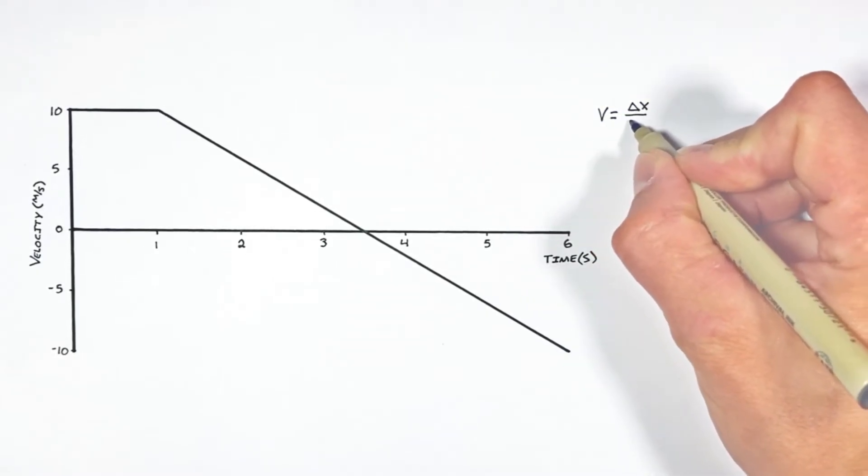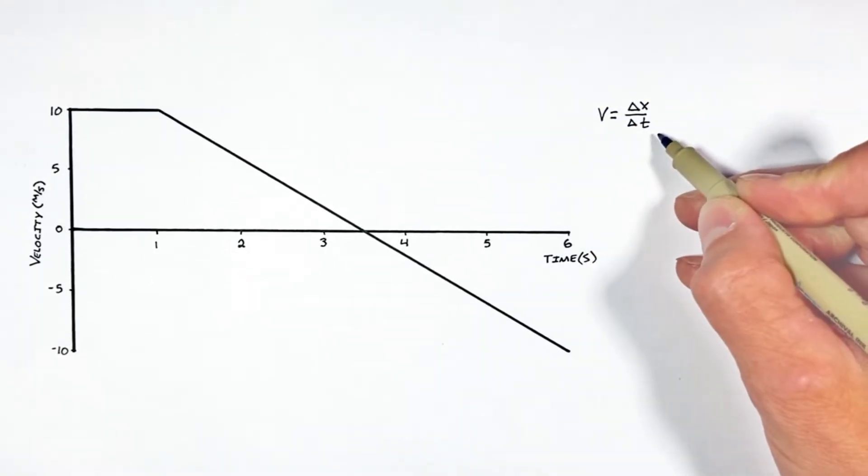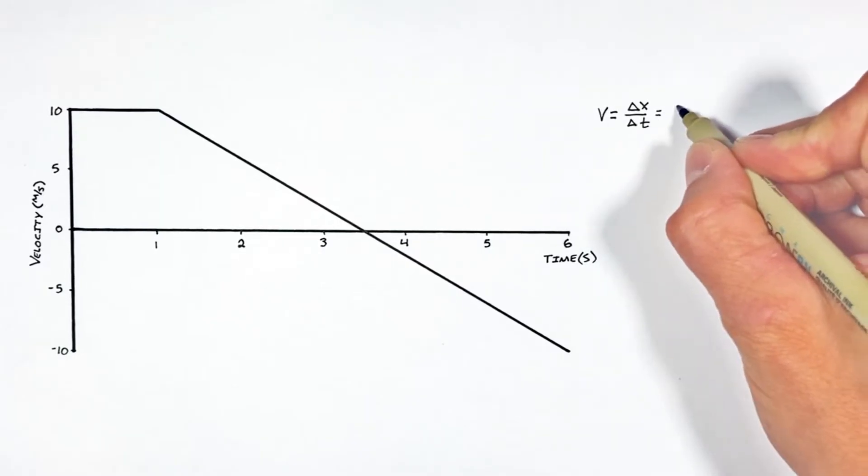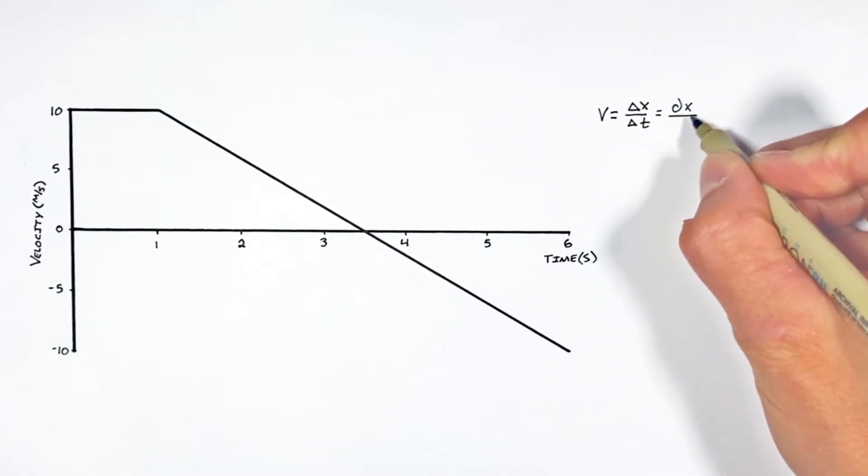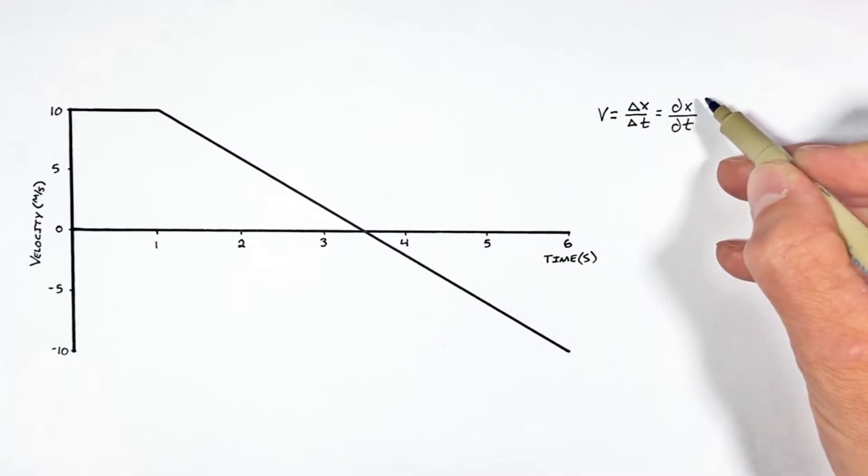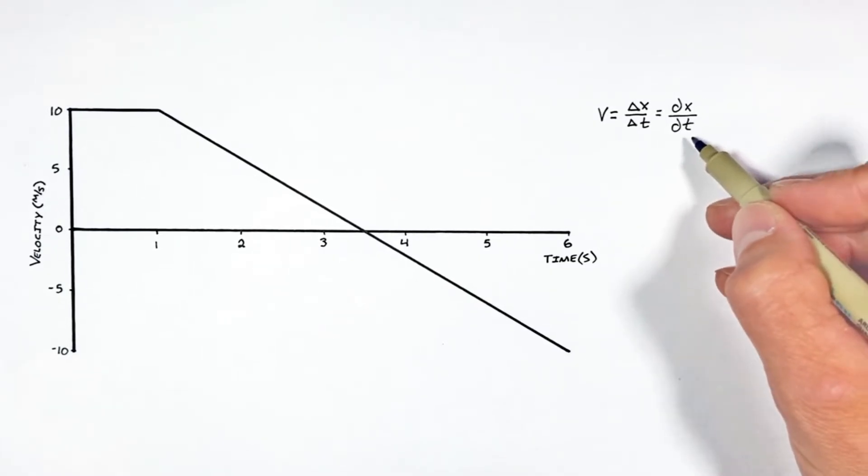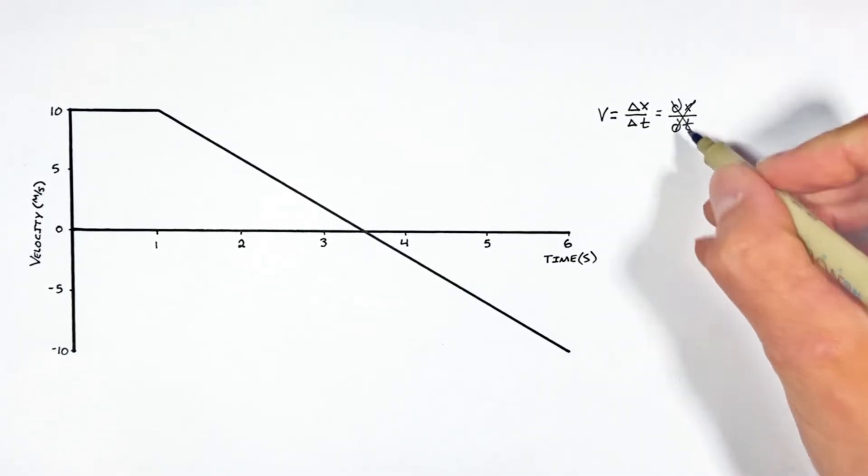And velocity can be given by a change in position over a change in time. Or if you want to get more strict about this, you could even say that is an infinitely small change in position over an infinitely small change in time. But again, that's getting into calculus and I don't want to go there today.